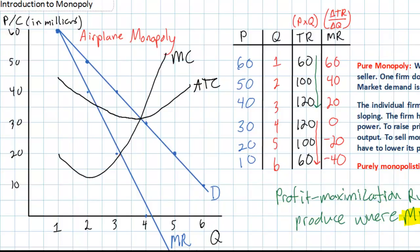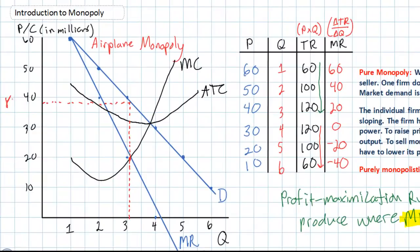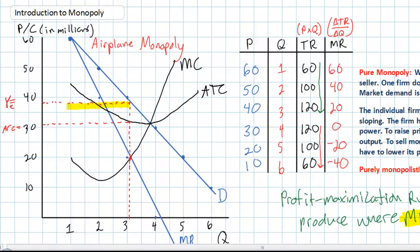With the marginal cost and marginal revenue curves on our graph, we can determine the profit-maximizing level of output. Marginal cost and marginal revenue intersect at around 3 airplanes. Drawing a dotted line up, the price the firm can sell at is around 40 million dollars — so the equilibrium price in this market is approximately 40 million dollars. The firm's average total cost lies below the price at around 30 million dollars. Our monopolist will want to produce 3 airplanes and sell them at 40 million dollars each, earning economic profits equal to the yellow rectangle shown.